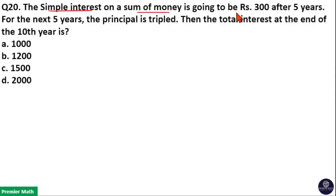Simple interest on a sum of money is going to be Rs. 300 after 5 years. For the next 5 years, principal is tripled. Then the total interest at the end of the 10th year is?